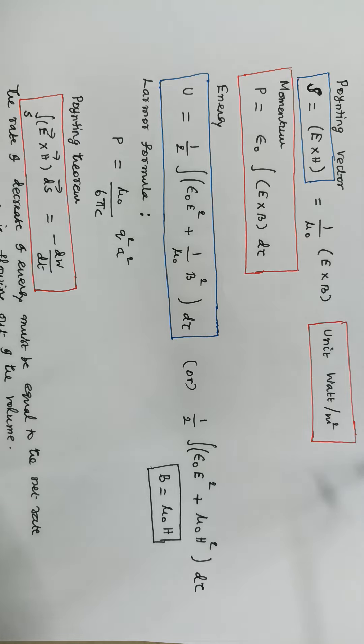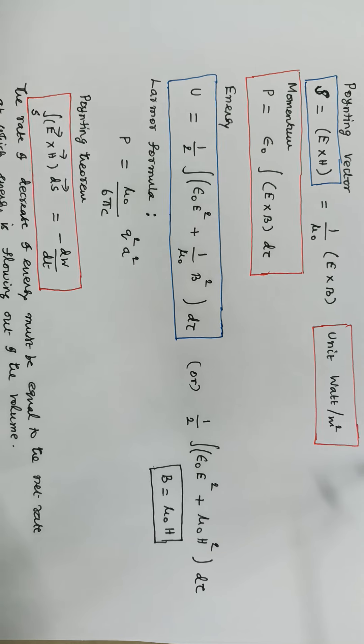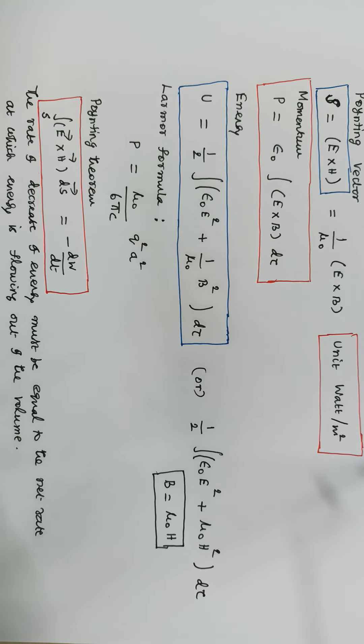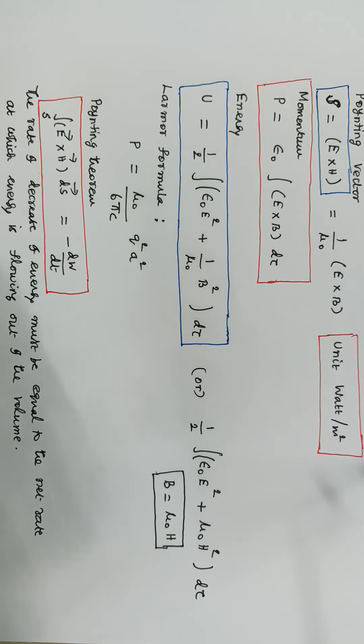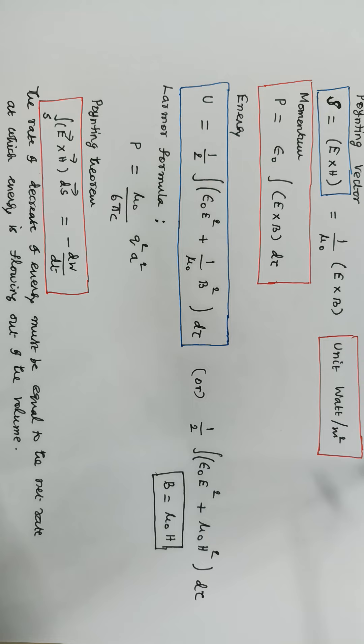The pointing theorem is expressed as integral E cross H dS equals minus dW by dT, which means that the rate of decrease of energy must be equal to the net rate at which energy is flowing out of the volume. This is called the pointing theorem.